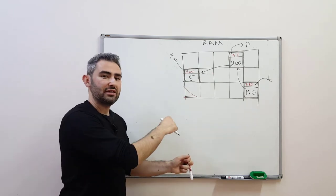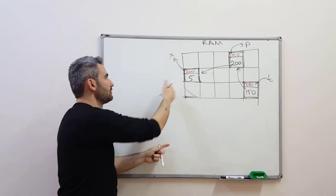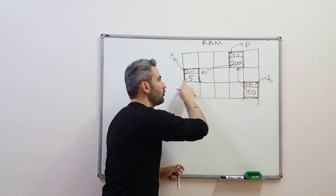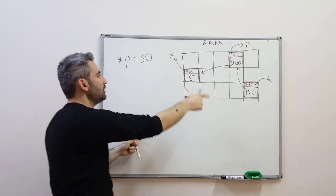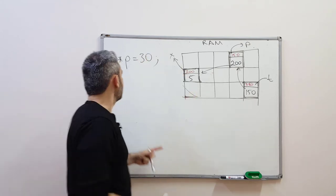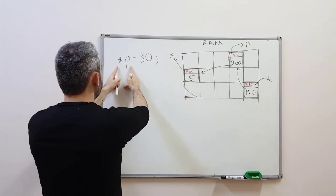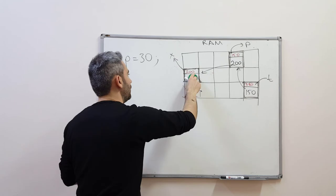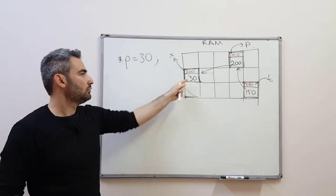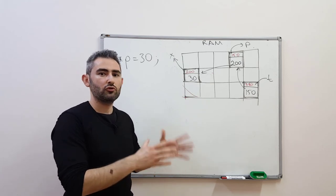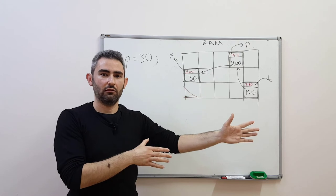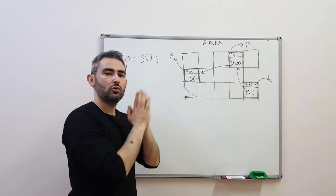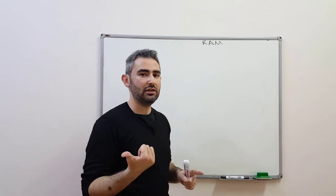Going back to our previous example: we could change the value of x by saying x = 30, but since p is holding the address of x, I can use the dereference notation to change the content of x using the pointer. This means go to this address — which is 200 — dereference it, and make the contents 30. So if you execute this code, it will make this location 30. Pointers are mostly used to access a memory location directly without using any variable name. And now we will look at this in a compiler with actual code.